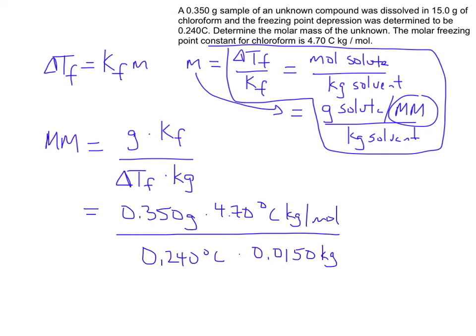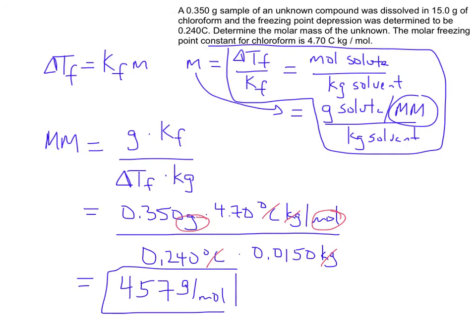Let's look at the units. The kilogram unit factors out, the degrees Celsius unit factors out, and we're left with grams per mole — exactly the right unit for molar mass. Plugging the numbers into a calculator gives 457 grams per mole as the final answer. So that's using freezing point depression, one of the colligative properties, to calculate the molar mass of an unknown compound dissolved in chloroform, where we observed a measurable freezing point depression.